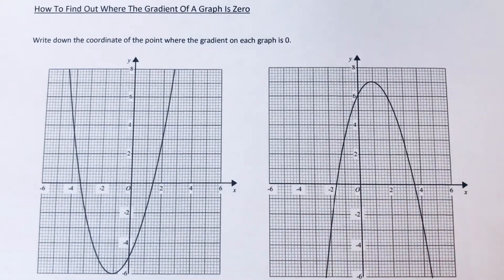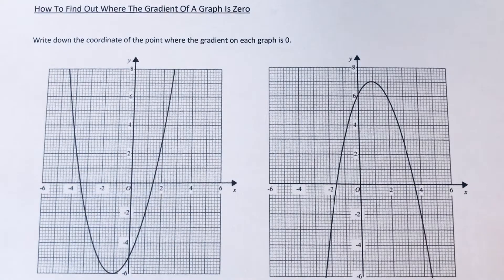Hi guys, welcome back. This is Maths 3000. Today I'm going to show you how to write down the coordinates of a point on a curved graph where the gradient is 0. So to do this, you need to look at the points on the graph where the graph levels off.